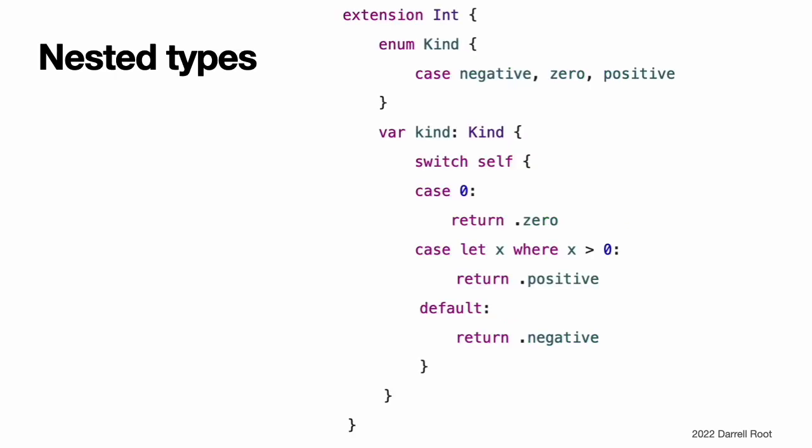Nested types. Extensions can add new nested types to existing classes, structures, and enumerations. This example adds a new nested enumeration to int. This enumeration, called kind, expresses the kind of number that a particular integer represents.